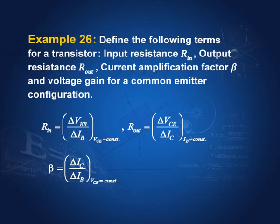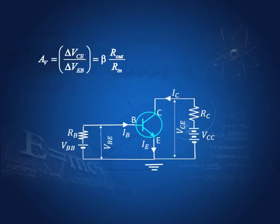Define the following terms. The input resistance is equal to delta V_BE by delta I_B, and the output resistance is delta V_CE by delta I_C, and beta is the current gain — it is delta I_C by delta I_B — in the common emitter configuration. And A_V is the voltage gain, that is delta V_CE by delta V_EB. This is output divided by input, and this is equal to beta times the ratio of the output to the input resistances. This is the circuit for the common emitter amplifier.